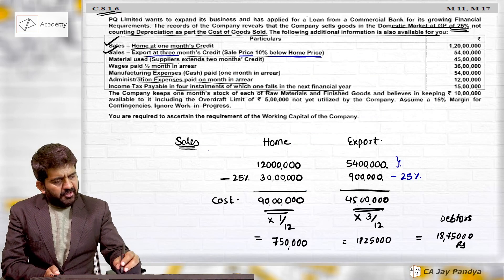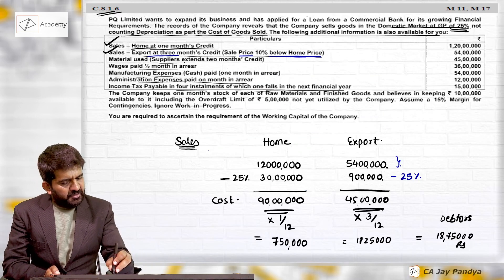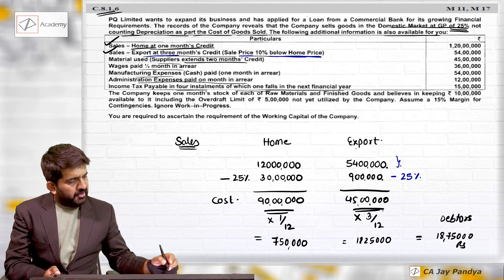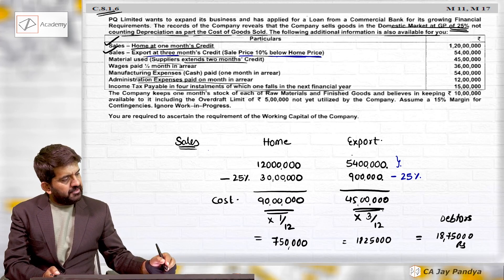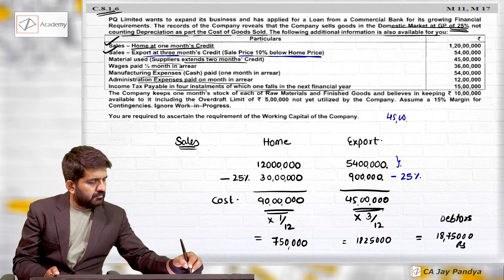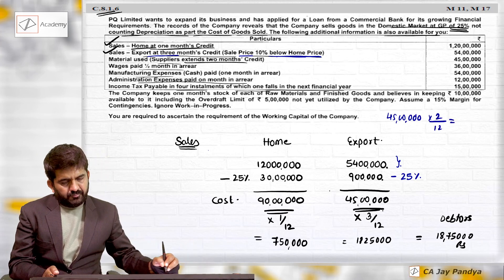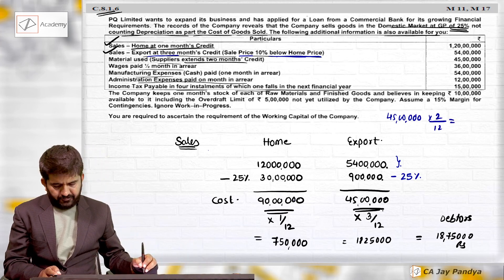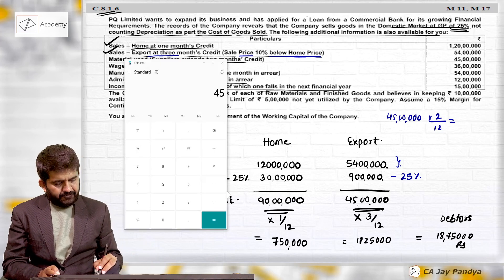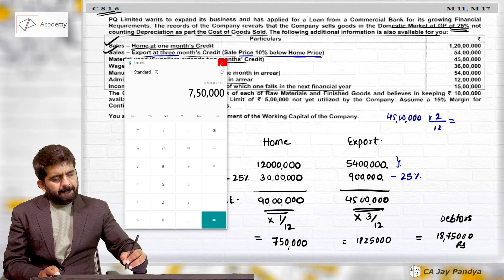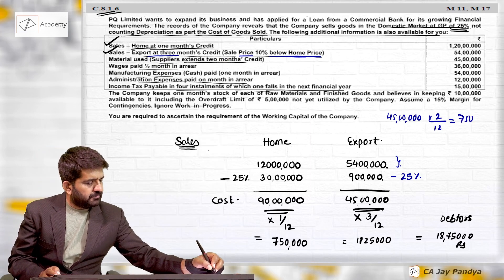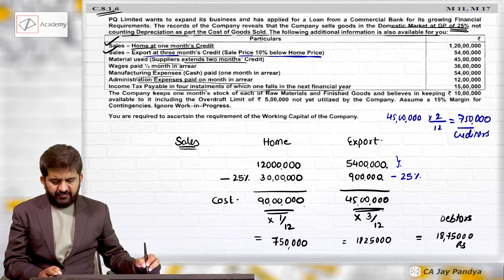For materials: supplier extends two months credit. Material used is 45 lakhs. Creditors = 45 lakhs multiplied by 2 divided by 12 = 7 lakh 50,000.